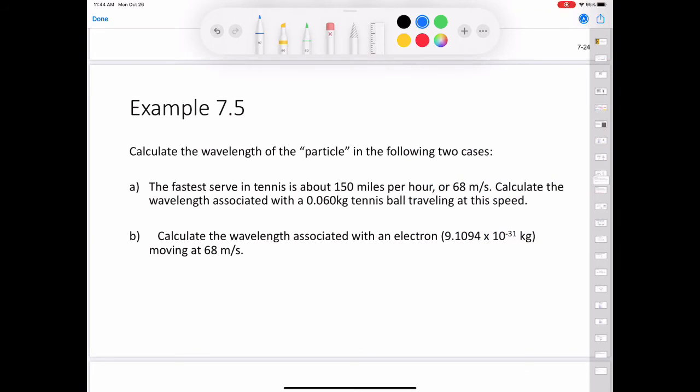Question 7.5 asks us to calculate the wavelength of the particle in each of the following cases. The fastest serve in tennis is about 150 miles per hour, or 68 meters per second. Calculate the wavelength associated with the 0.060 kilogram tennis ball traveling at this speed. Well, to solve this problem, we're going to use the equation λ = h/(mv).